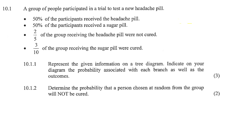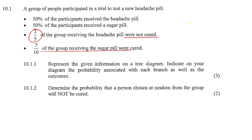A group of people participated in a trial to test a new headache pill. 50% received the headache pill and 50% received a sugar pill. Two-fifths of the group receiving the headache pill were not cured, and three-tenths of the group receiving the sugar pill were cured.